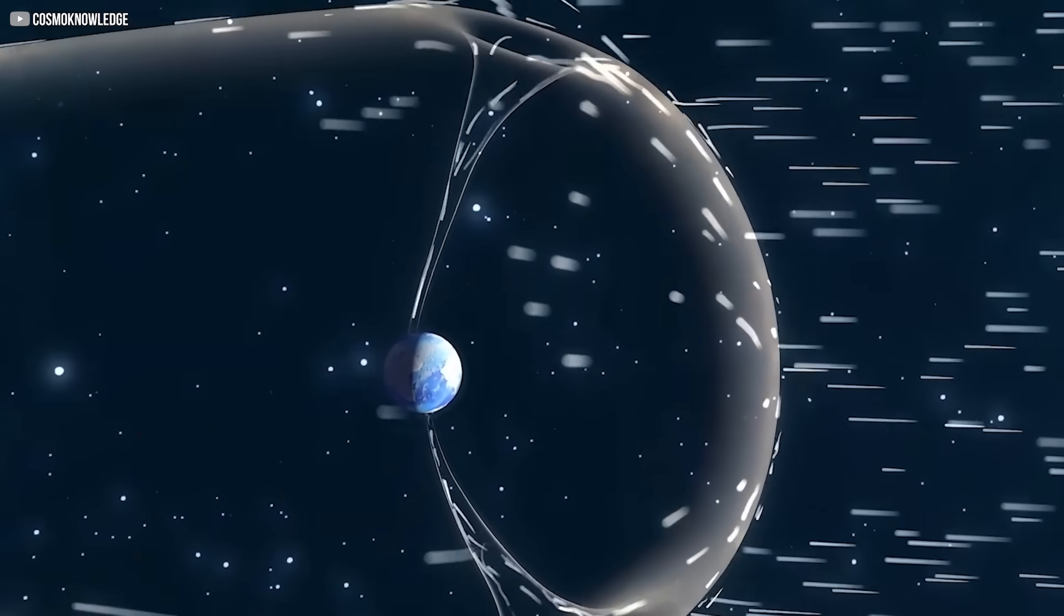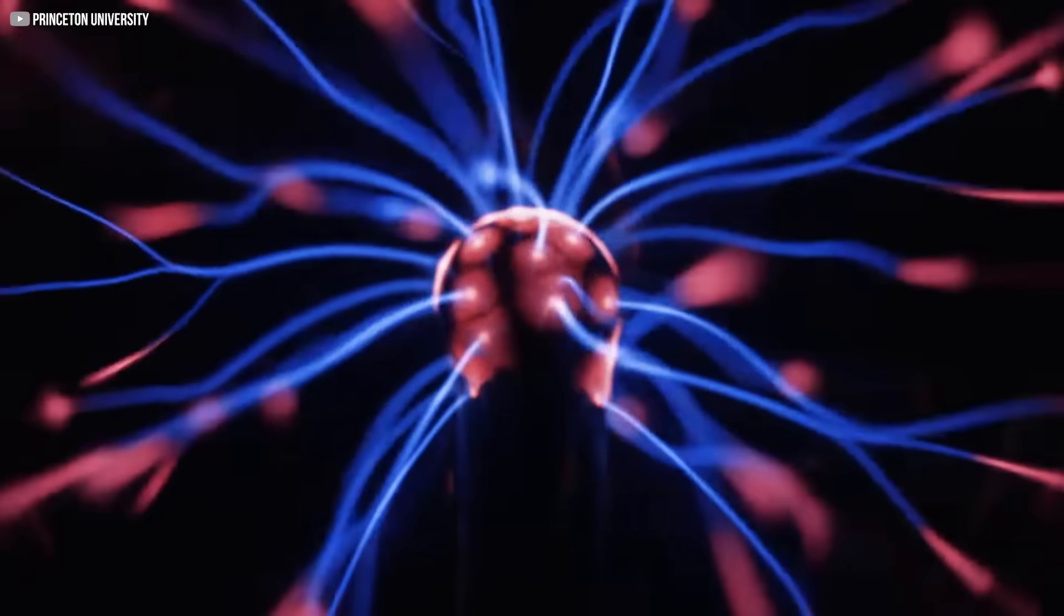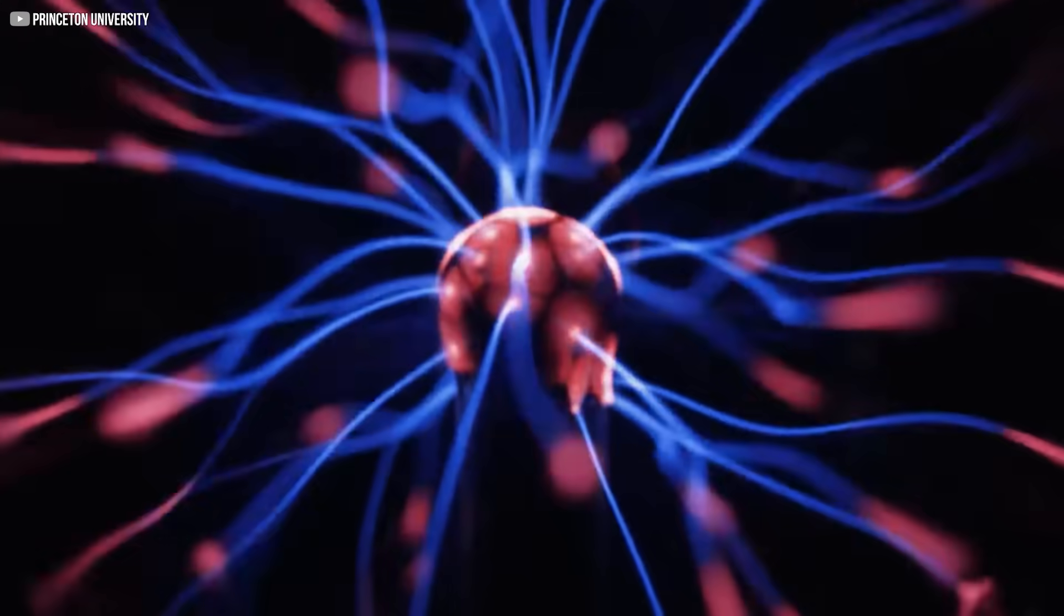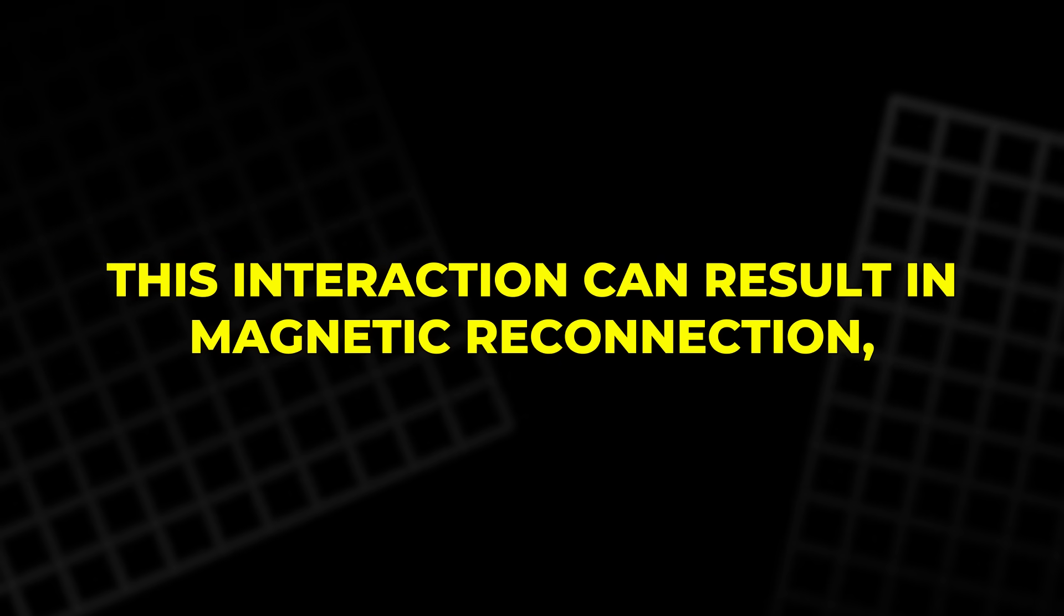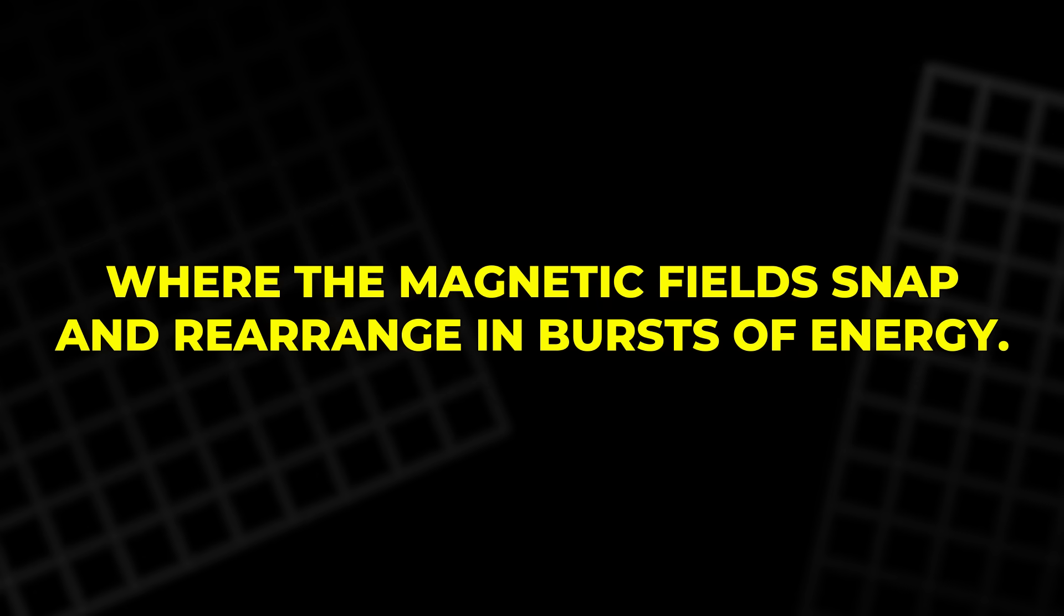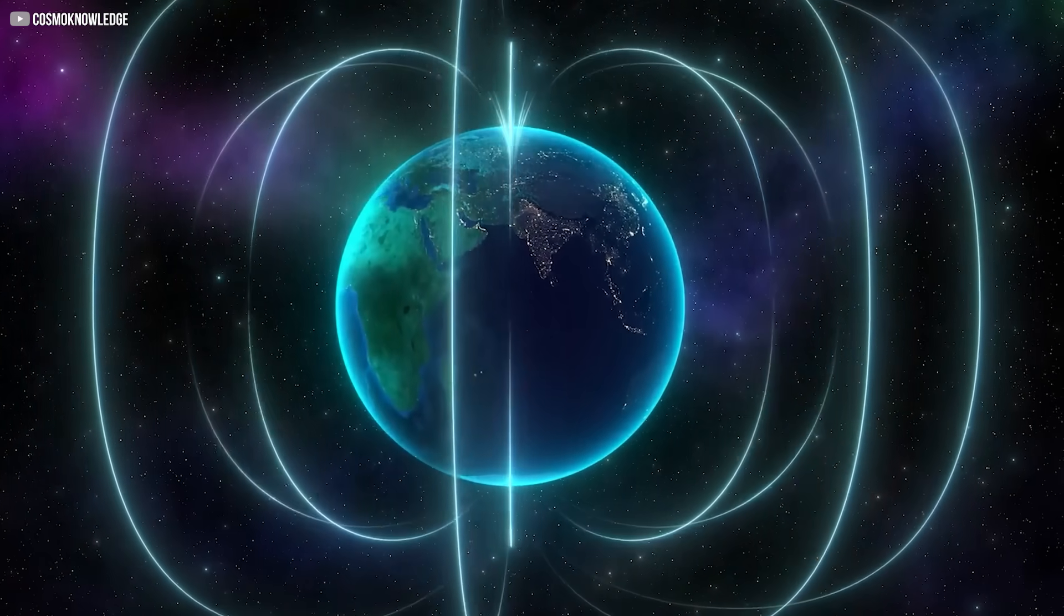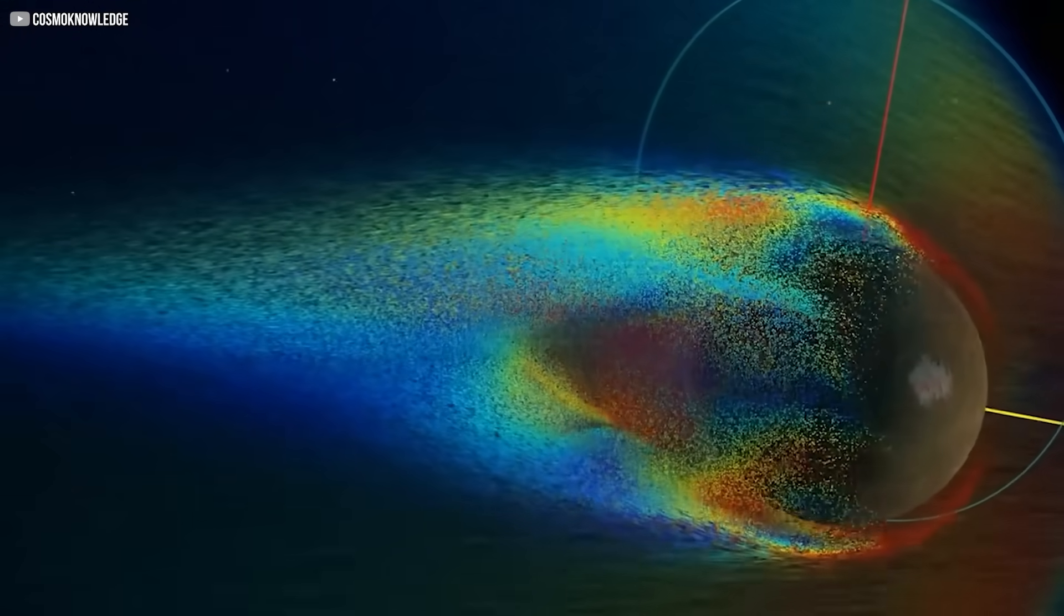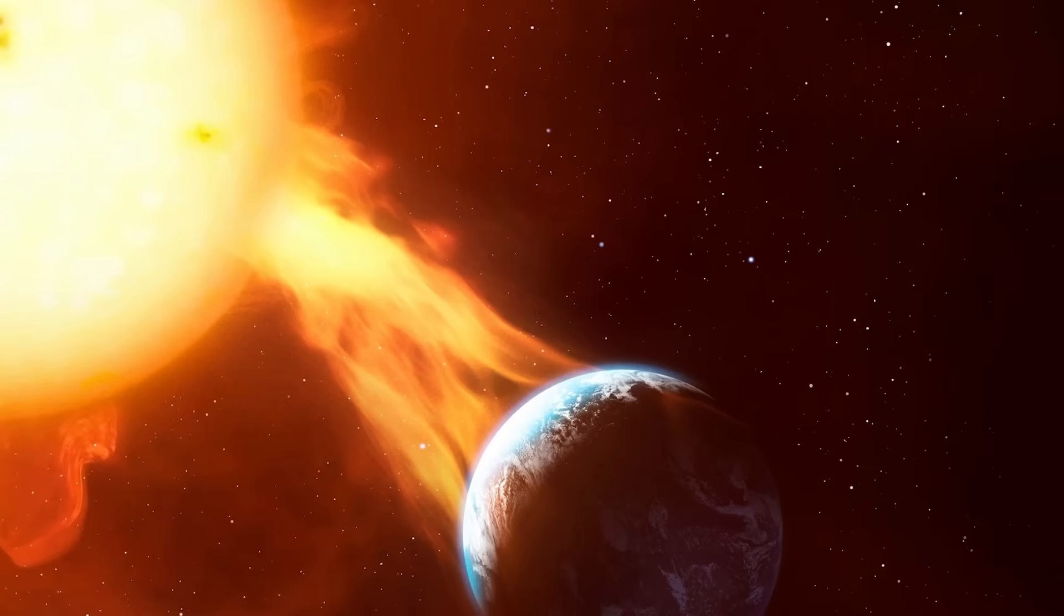As the solar wind meets the interstellar medium, the pressure builds up, and the magnetic fields from both regions become compressed. This interaction can result in magnetic reconnection, where the magnetic fields snap and rearrange in bursts of energy. These bursts, known as collisionless shocks, occur when charged particles rapidly change direction, creating sudden temperature spikes.